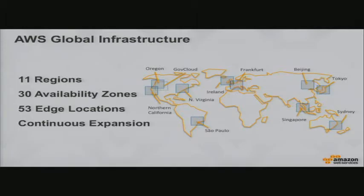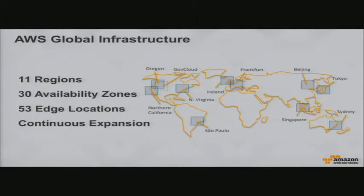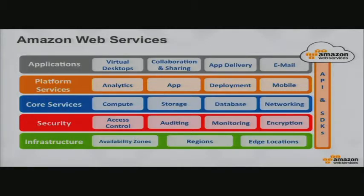We also have availability zones — clusters of data centers within a region. For example, the Tokyo region has three availability zones on separate power grids, separate network connectivity, and separate tier-one internet service providers. If you run an application across multiple availability zones, you have a highly available application — even if a complete data center or power grid fails, it only affects one availability zone. We also have 53 edge locations for network entry points, content delivery, and DNS resolution.